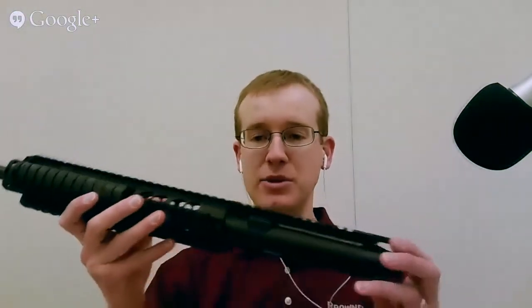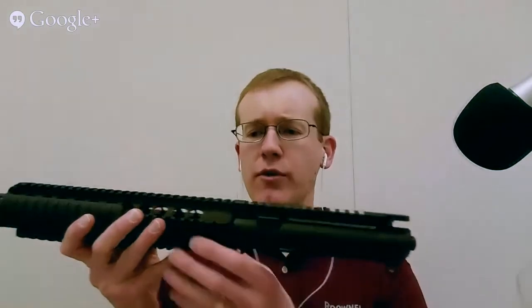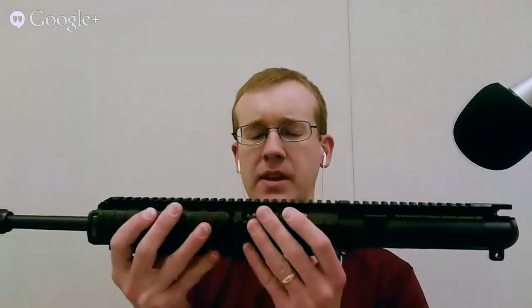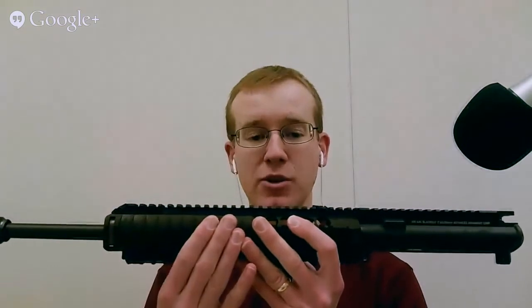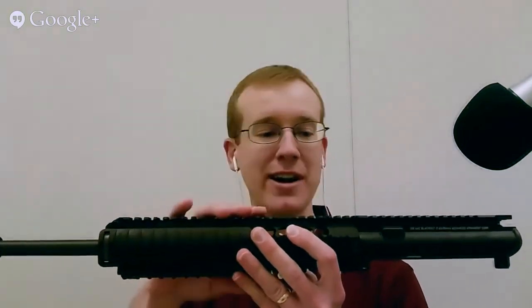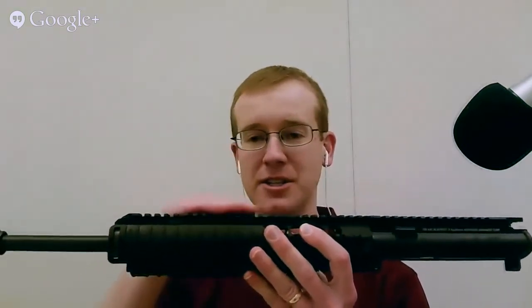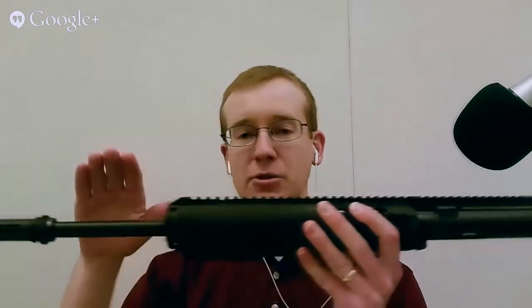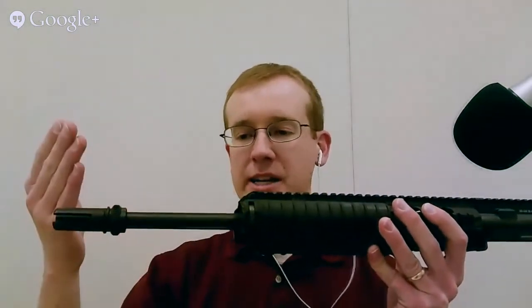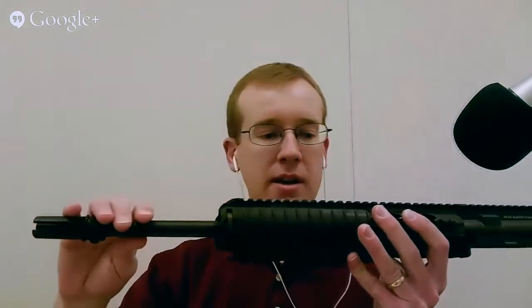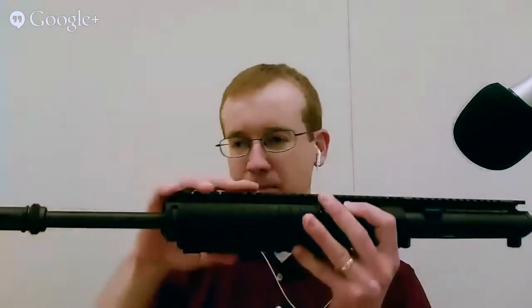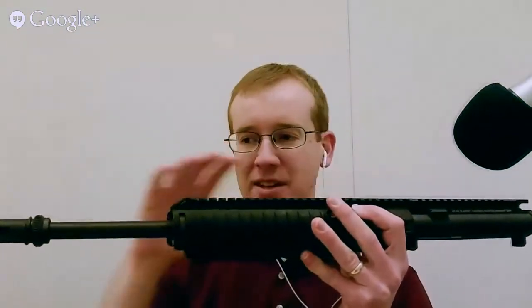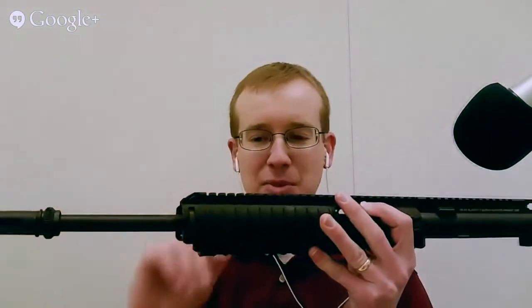This is a 300 Blackout upper receiver. The newer version doesn't have the rails all the way. The interesting thing they're implementing is they use Knight's Armament URX handguards, so very nice handguards, a nice monolithic system on them, and then they use their 300 Blackout barrels or AAC branded barrels. Really nice upper receivers.